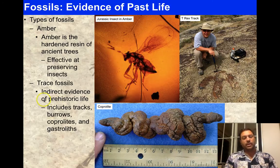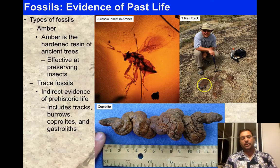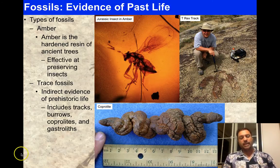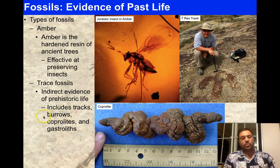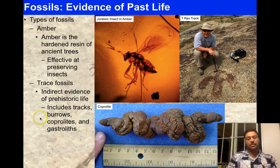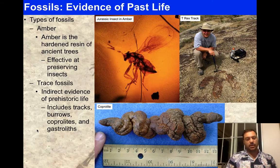Trace fossils are indirect evidence of prehistoric life: tracks, burrows, coprolites, and gastroliths. Here a paleontologist believes he's looking at a T-Rex track — he gives better than 50-50 odds that a juvenile T-Rex made this track before 65 million years ago. A coprolite is fossilized dung — the best ones come from small reptiles and we can use them to figure out their diets. Gastroliths are rocks that dinosaurs and their reptilian cousins ingested into their digestive tract to help grind up plant material in their gizzard.